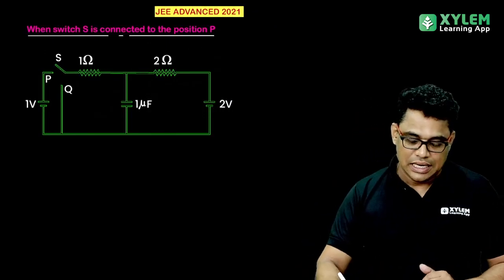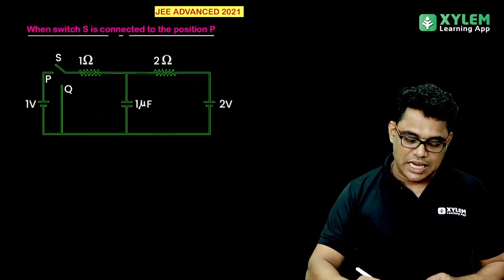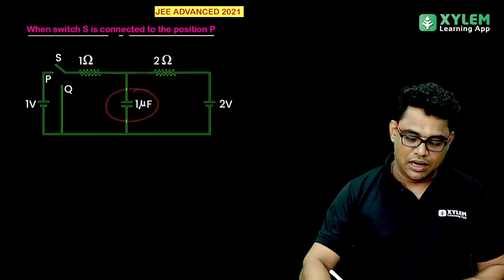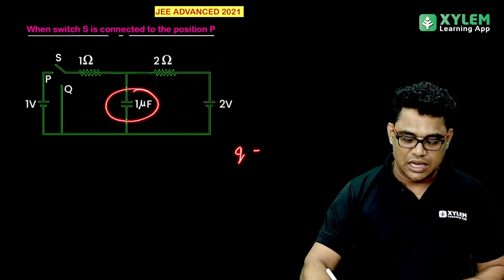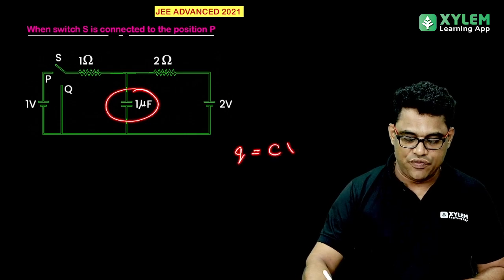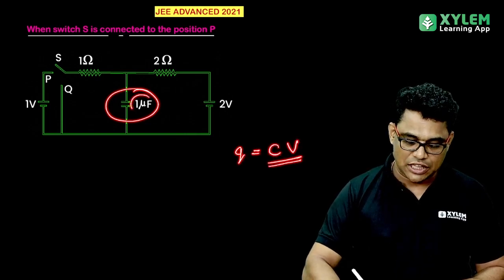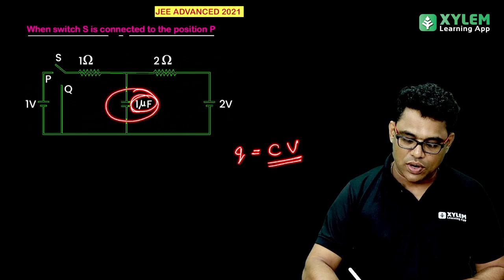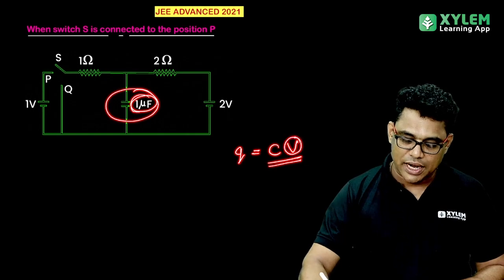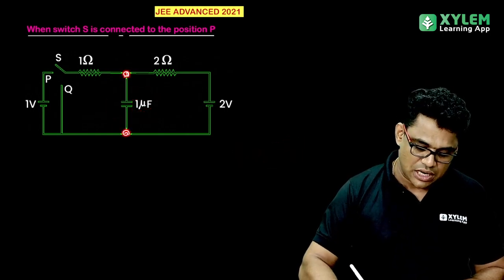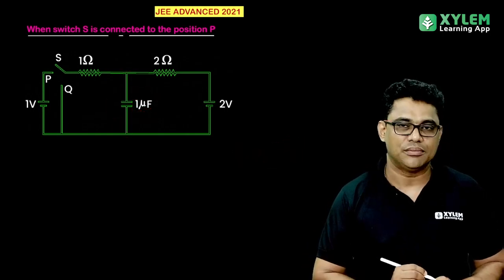It is not difficult. Q is equal to C times Vn. This equation is applied. C is equal to 1 µF. Vn is equal to the potential difference.